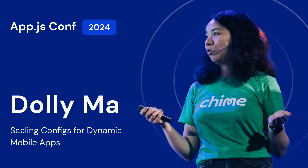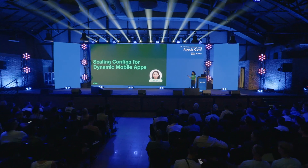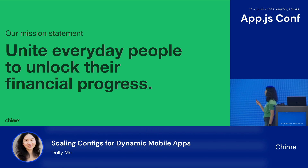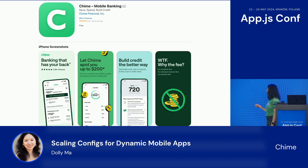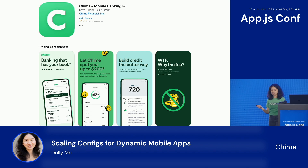Hello everyone. It's really an honor for me to be here today, and I'm going to talk about scaling configs for dynamic mobile apps. My name is Dolly, and I'm an engineer at Chime. Chime is a fintech company based in the US, and our mission is that we want to unite everyday people to unlock their financial progress. We offer features like up to $200 overdraft and secured credit card to help you build your credit, and accounts without monthly fees.